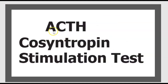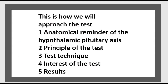Today's topic is about the ACTH cosyntropin stimulation test. This is how we will approach the test: first, anatomical reminder of the hypothalamic-pituitary axis; second, principle of the test; three, technique of the test; four, interest of the test; and five, results.